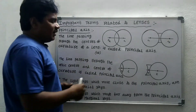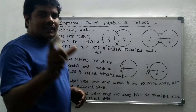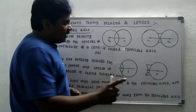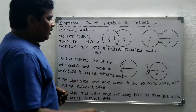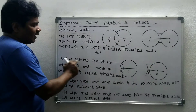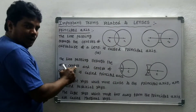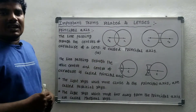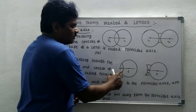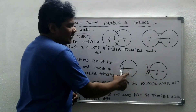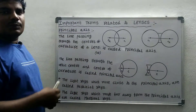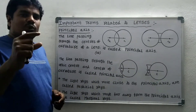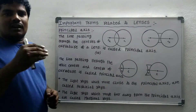The principal axis can also be defined another way: the line passing through the optic center and the center of curvature is called the principal axis. Light rays which move close to the principal axis are called paraxial rays, while those away from it are called marginal rays.